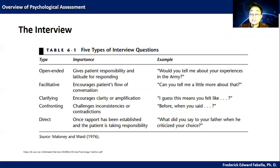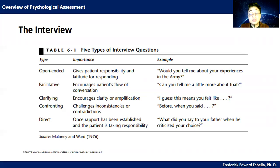Then we have the facilitative question. If the client is reluctant to talk about something in detail, you can ask facilitative or follow-up questions, such as 'Can you tell me more about this or that?' We also have clarifying questions — if the client is unable to answer directly, you want to clarify what the client is saying. When you encounter inconsistencies or contradictions in what the client is saying, you may use confronting questions. And when you want a clear answer, you can just ask directly — so you have direct questions. These are the five types of interview questions.